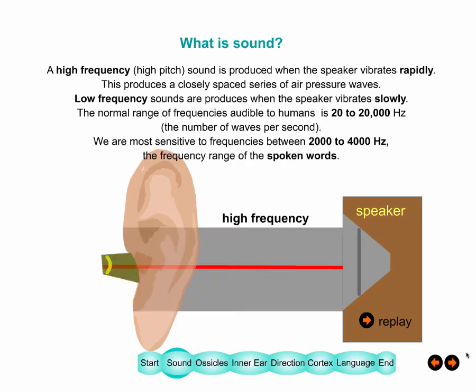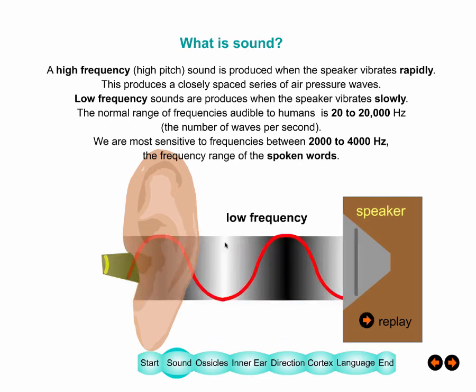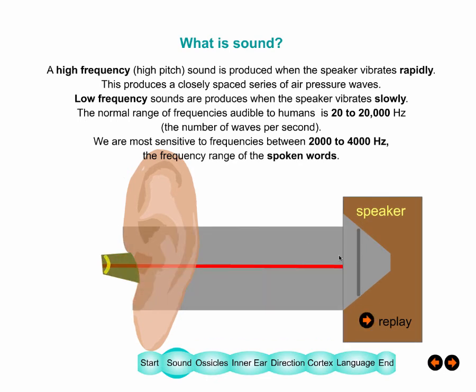Sounds can also differ in frequency. One is produced by a rapid vibration of the speaker and the other by a slower vibration. Speakers can vibrate anywhere from 20 times a second to 20,000 times a second, and in your young years you can hear that full range.